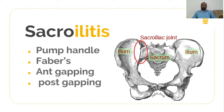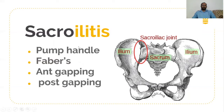The clinical examination of the sacroiliac joint includes mainly these tests. With the first examination itself, we can diagnose sacroiliitis and then exclude the other tests. In the pump handle test, there is flexion of hip and knee and moving the knee towards the opposite shoulder forcibly. The patient is in supine position, and the examiner flexes the knee and hip and then forcibly moves the knee towards the opposite shoulder.